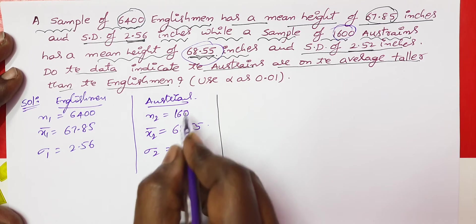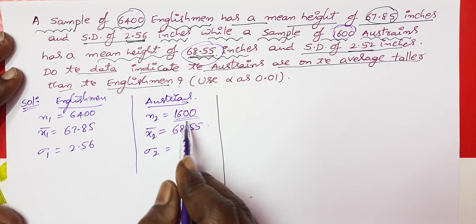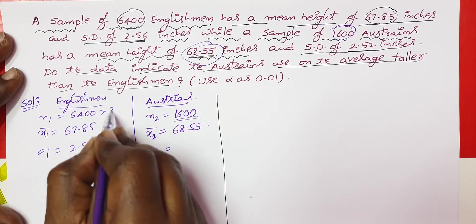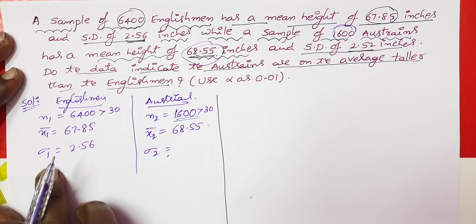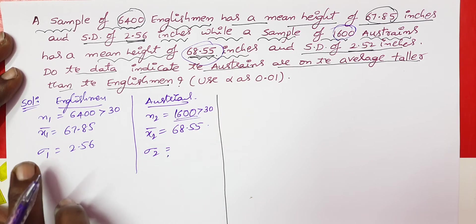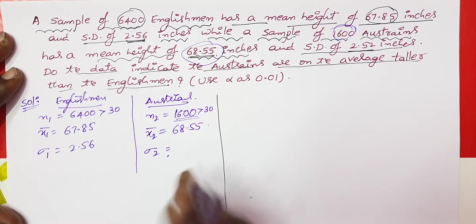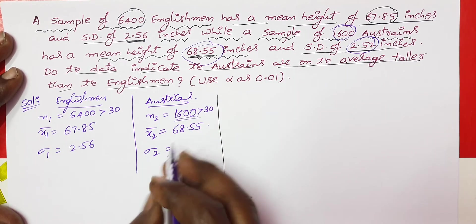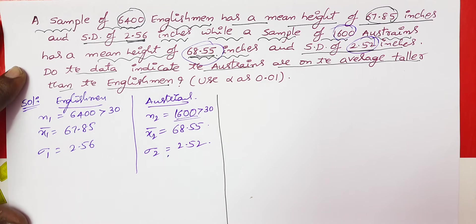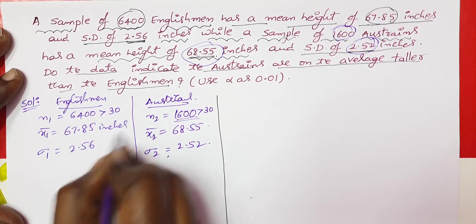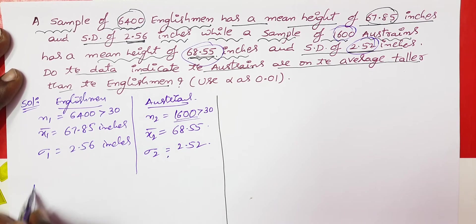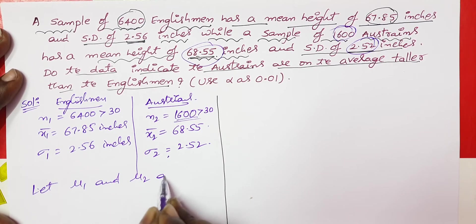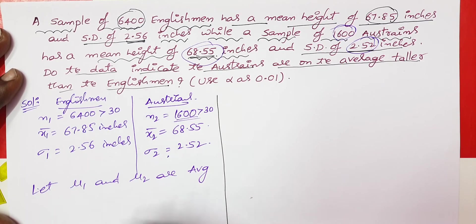The sample standard deviation for Austrians σ2 = 2.52. Let mu1 and mu2 be the average heights of both populations.